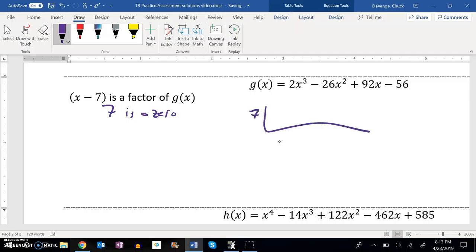So let's divide that out. So 2, I don't need the x cubed, minus 26, plus 92, minus 56. Draw that a little neater. So bring it down, multiply, and then I can add, and then multiply.